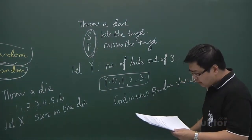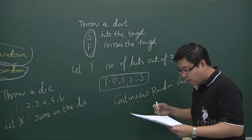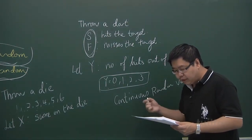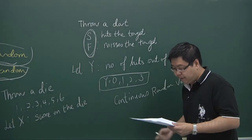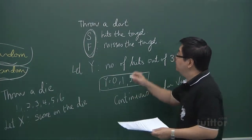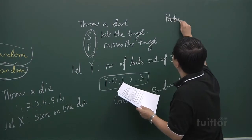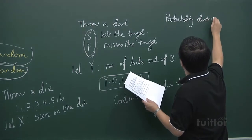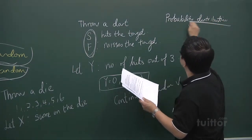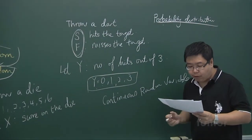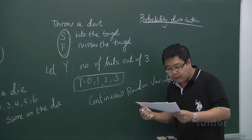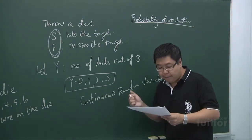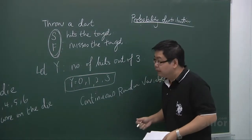Now, a probability distribution fully describes all the possible outcomes together with the probability of each happening. For it to be a probability distribution, all the probabilities must sum up to 1. I'll give you an example.